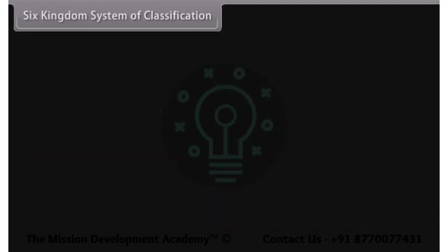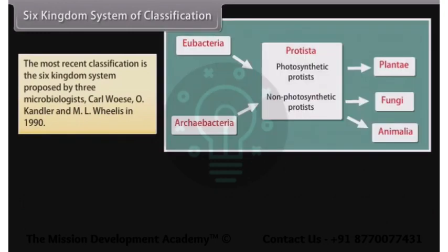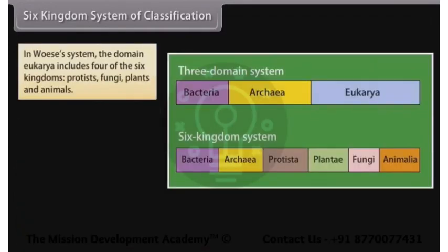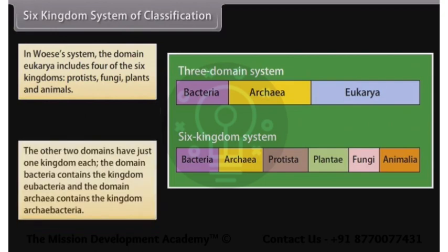The most recent classification is the Six Kingdoms System, proposed by three microbiologists — Carl Woese, O. Candler, and Emil Willis — in 1990. They proposed that all organisms be divided into three major groups called domains, above kingdom level: Eukarya, Bacteria, and Archaea. The domain Eukarya includes four of the six kingdoms: protists, fungi, plants, and animals. The domain Bacteria contains the kingdom Eubacteria, and the domain Archaea contains the kingdom Archaebacteria.